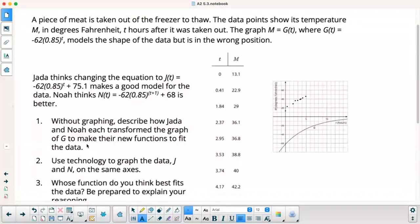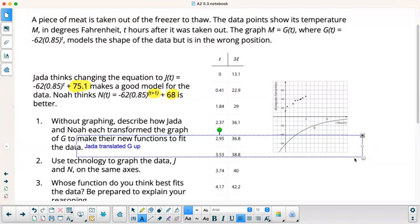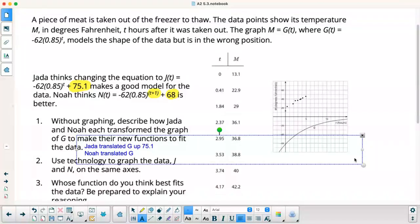So for this one, how did they transform? So I would say Jada. The only difference with Jada's graph is this. On Noah's, he changed these. So I would say Jada translated G up 75.1. And then it looks like Noah translated G up 68 and left 1. Because this is anytime you add a number on, it's up. And then when I replace my variable with something plus a number, that's going to actually shift left. So this is left 1.